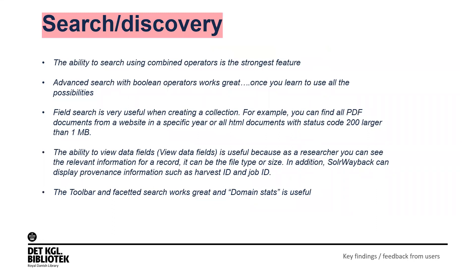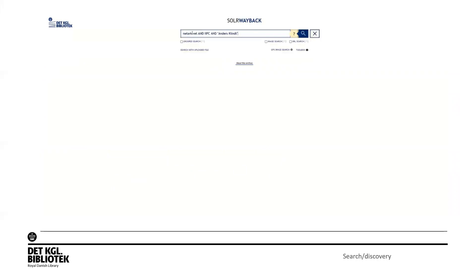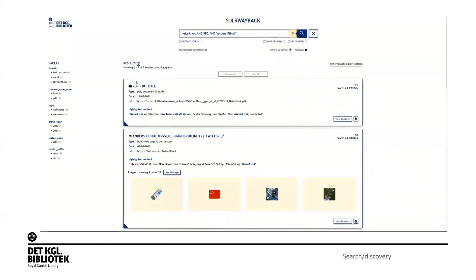Search and discovery brings a lot of mentions. The ability to search using combined operators is the strongest feature. Advanced search with Boolean operators works great once you learn all the possibilities. Field searches are useful when creating a collection, and the ability to view data fields is useful because you can see relevant information per record — file type or size. Solar Wayback can also display provenance information such as harvest ID and job ID. People like the toolbar, faceted search, and domain stats. Searching for NetArchived, IIPC, and Anders Klint gives faceted results — domain is Twitter, aru.dk, etc. — across web pages and PDFs.